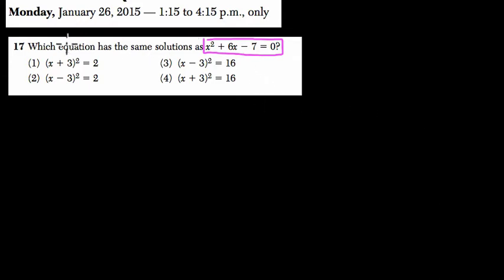So, first of all, they're asking which equation has the same solution as this equation right here. I'll write it out: x squared plus 6x minus 7 equals 0. So that just means which of these is really the same equation written in a different way.